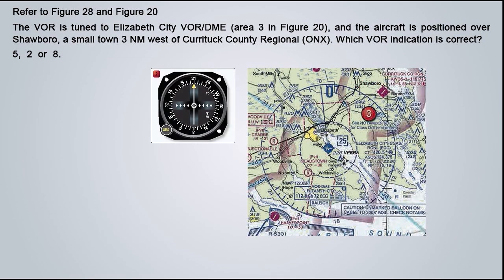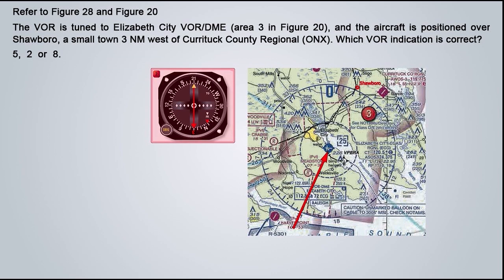Now let's do the same with VOR number 2. First, we look at the flag, which in this case points straight down. And because the needle is again centered, the number we're looking for to fly directly to the station is found straight down from the middle of the instrument — that number is 030 once again. So to head directly to Elizabeth City VOR, we would need to fly a heading of 030. Drawing that north-north-easterly heading on the chart, since this line is the exact same as the one we drew for VOR number 8, it's obvious that Showboro is nowhere close to it, which means VOR number 2 is also incorrect.